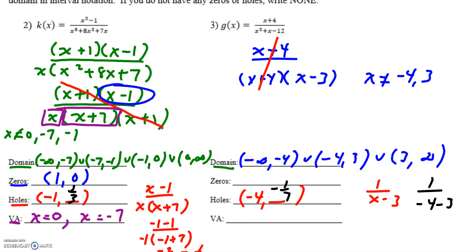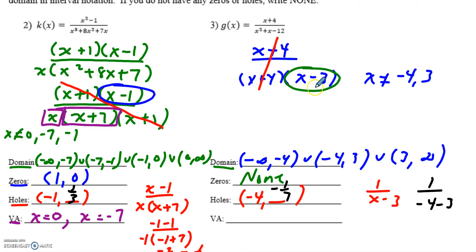Because what was in the numerator canceled out, I have nothing on top that could become a zero, so in this case I have no zeros. For vertical asymptotes, x cannot be three in the denominator, so the vertical asymptote is the line x equals three.